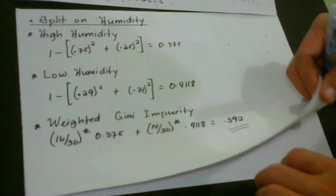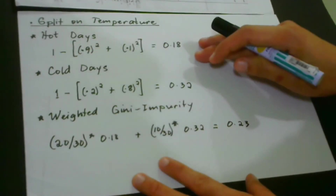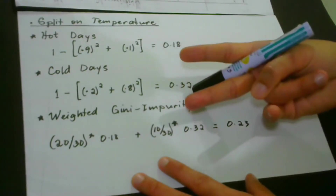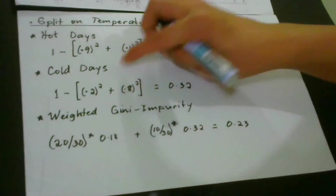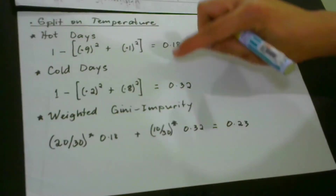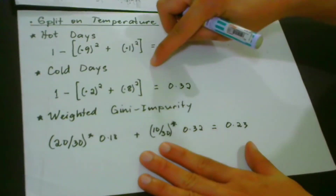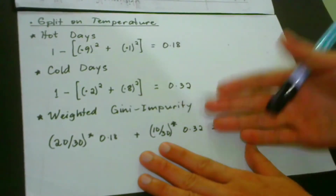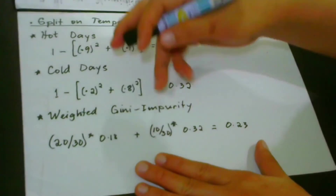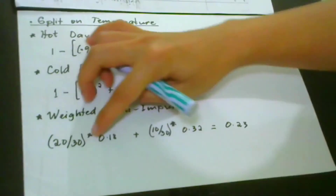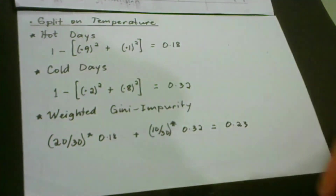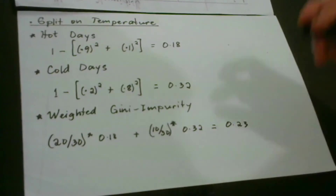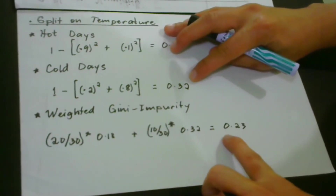Now we go to the split on temperature, which has two nodes: hot days and cold days. We plug in the values for hot days into the Gini impurity formula and get 0.18. For cold days, we plug in the corresponding values and get 0.32. Then we calculate the weighted Gini impurity: (20/30) × 0.18 plus (10/30) × 0.32, which gives us 0.23.